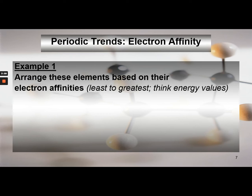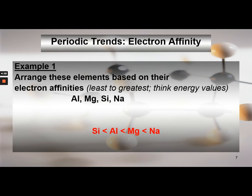Let's put some elements in order based on electron affinity energy values from least to greatest. Pull up your trends slides and periodic table, then pause. The elements are aluminum, magnesium, silicon, and sodium — all in the same period. Silicon has a more negative electron affinity value than sodium, meaning silicon has a higher affinity to form a negative ion, while sodium has a lower affinity due to its more positive value.